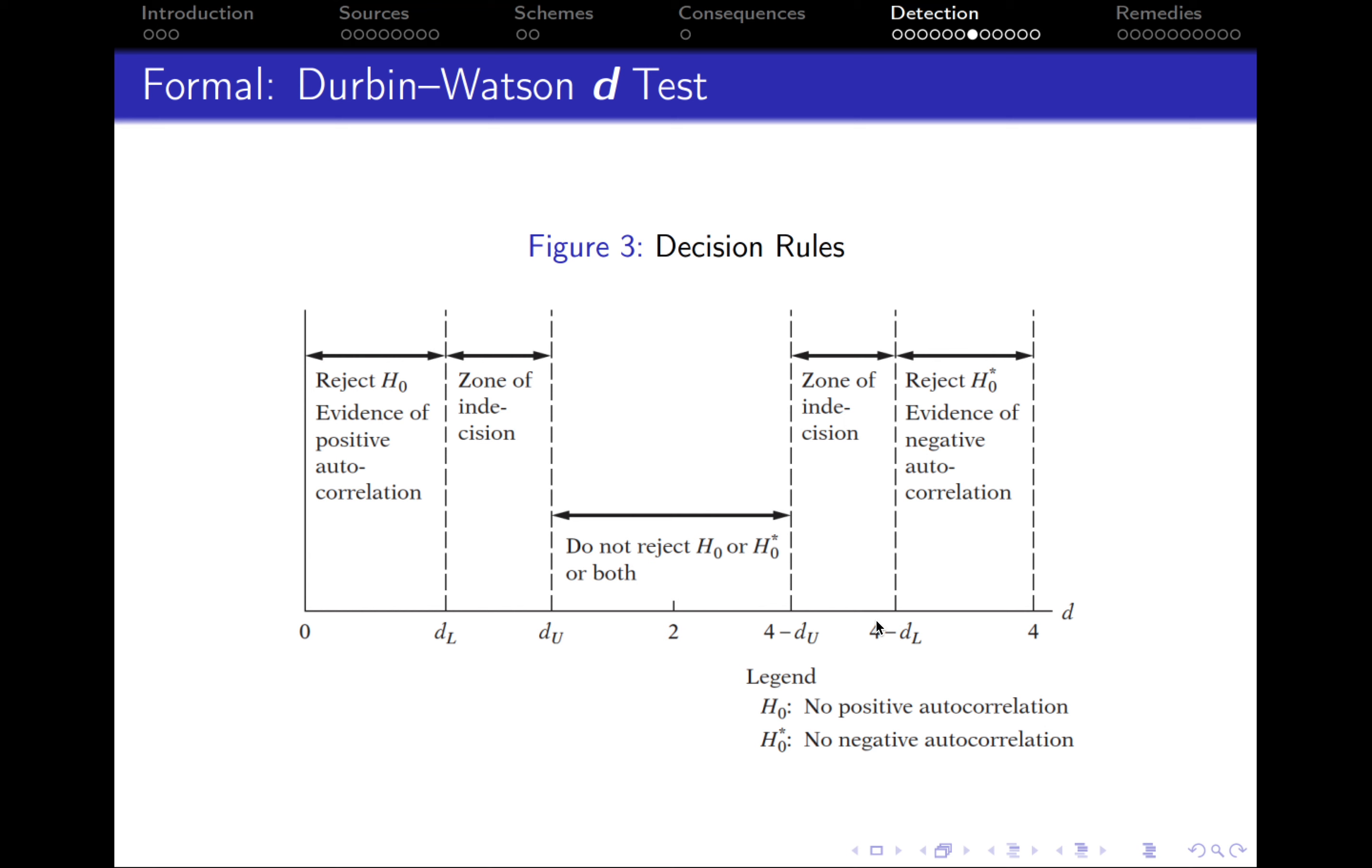However, if we are between 4 minus DU and 4 minus DL, again, we're in the zone of indecision. So unfortunately, in this zone, we cannot make any decision about the state of autocorrelation. So it means that we will have to do additional testing.